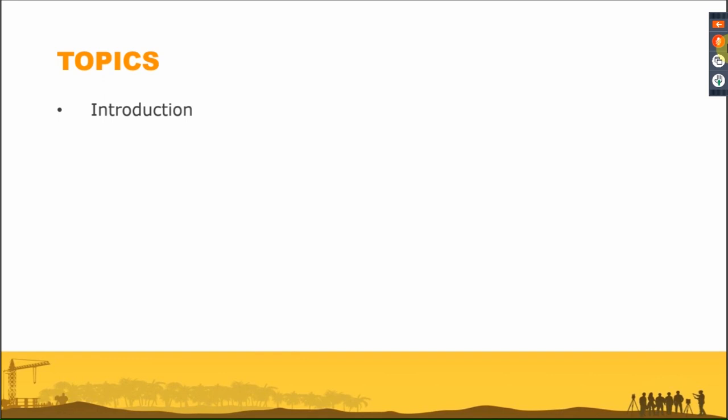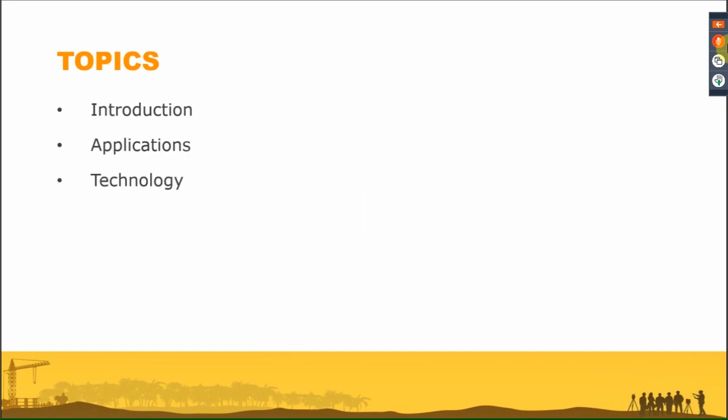We'll start with a quick introduction — what is the robotic total station for those who don't know — then we'll see the different applications we can approach using a robotic total station, and then we'll go into more detail, in particular discussing the technology: the internal technology of a robotic total station, what we call the Scout, the Aim, and the Track.